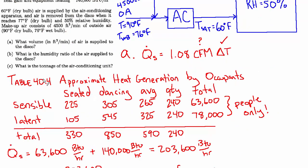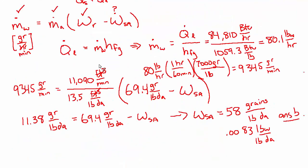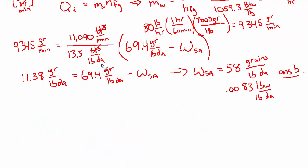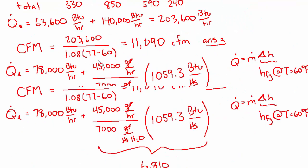And then for part C, they want to know what is the tonnage of the air conditioning unit. So the total capacity of this unit is going to be the sum of three things. Total load is the sensible load plus the latent load plus, and this is something we haven't dealt with at all in this problem so far,